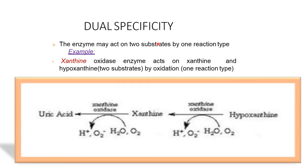Dual specificity — second type. The enzyme acts on two substrates by one reaction type. For example, xanthine oxidase acts on xanthine and hypoxanthine, which are two substrates, by oxidation — one reaction type.